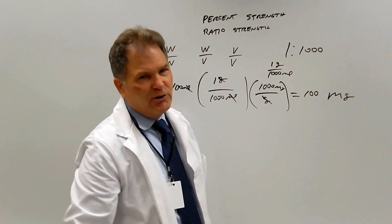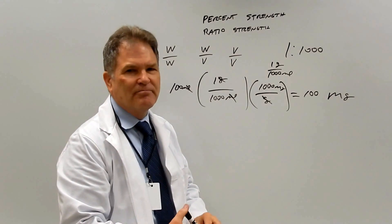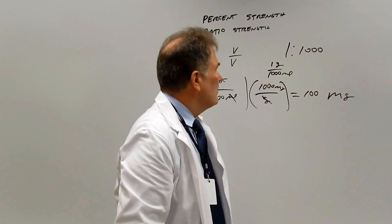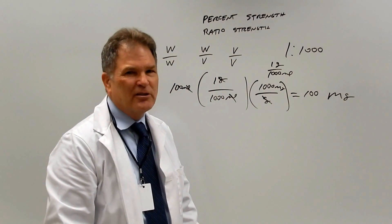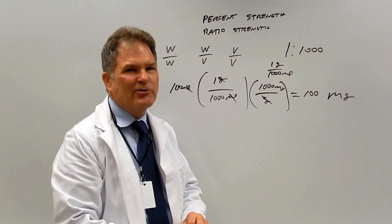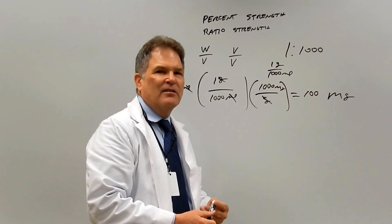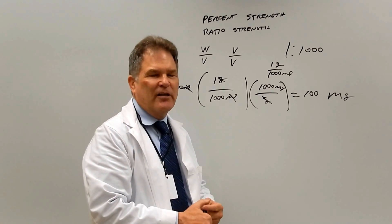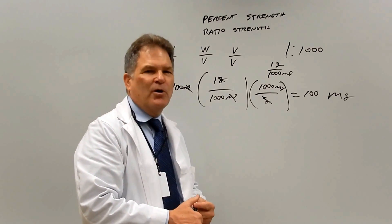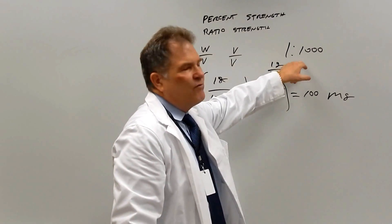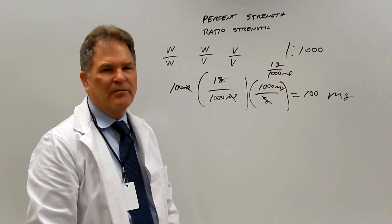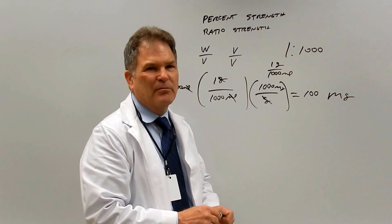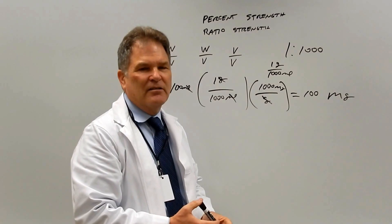When you see ratio strength, convert it first — that's your first step. Make sure it's a weight-volume, then do your problem. One side note: when working with ratio strength drugs in practice, look in the fine print where it will state the milligrams per mL, and use that to calculate. There have been many fatal mistakes with epinephrine using the wrong strength — it's a very dangerous system, so avoid it if you can.